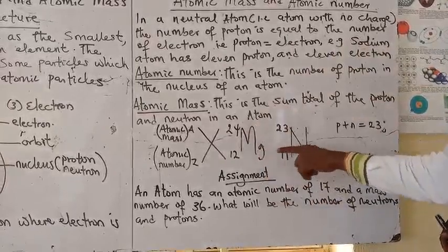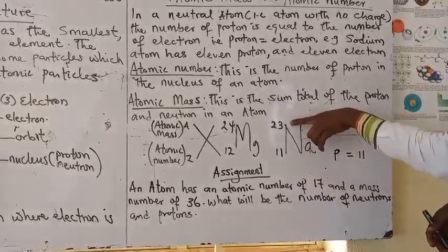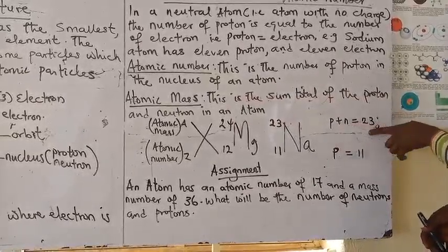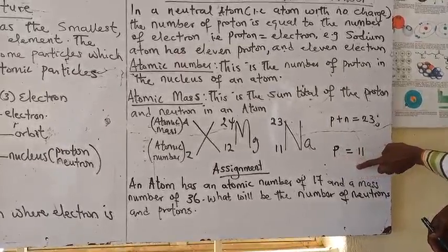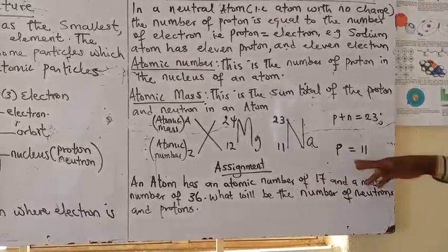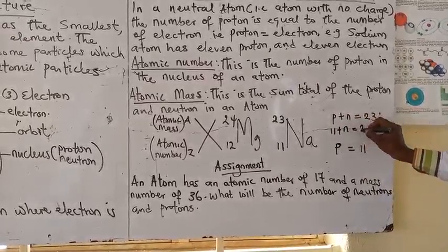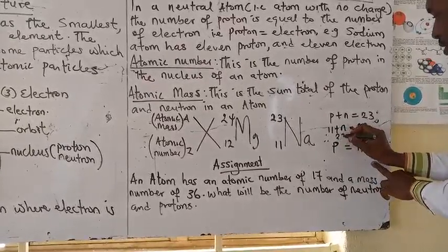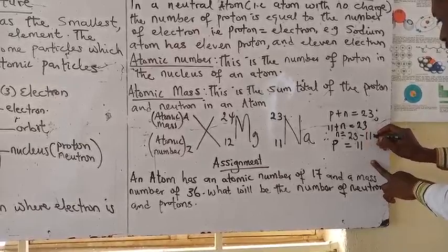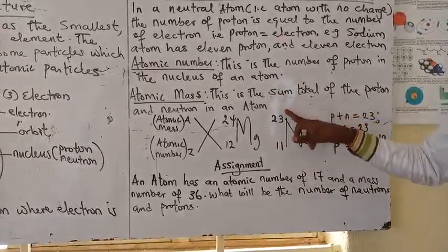From the definition, the proton number for the sodium atom is 11, and the mass number — or atomic mass — is the sum total of the proton and neutron. So this 23 is your proton plus your neutron, which equals 23, while the proton is equal to 11. If asked how to get the neutron number: since the proton number is 11 and the atomic mass is the sum of proton and neutron, you write 11 plus N equals 23, so N equals 23 minus 11, which gives you 12. That is the neutron number — you simply subtract the proton number from the atomic mass to get the neutron.